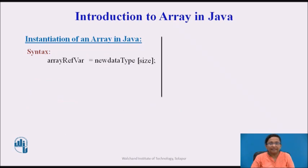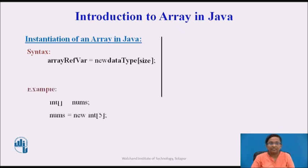Next is how to instantiate an array in Java. When an array is declared, only a reference of the array is created. To actually allocate memory to the array, we use the new operator. Here, data type specifies the type of data being allocated, size specifies the number of elements in the array, and the array reference variable is the name of the array variable linked to the array. Here is an example — array nums is declared and then in the next line the new operator is used to instantiate this array.